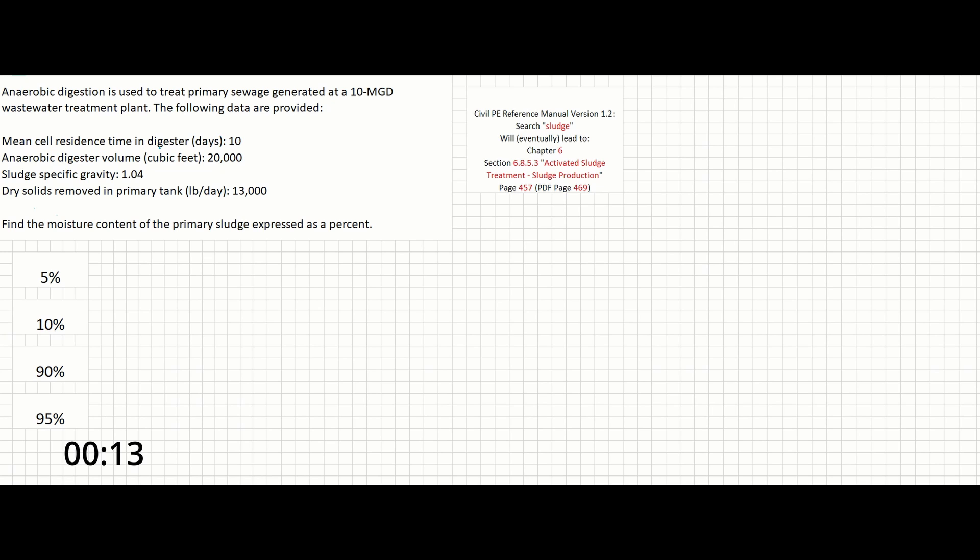The mean cell residence time in the digester is 10 days. The anaerobic digester volume is 20,000 cubic feet. The sludge-specific gravity is 1.04, and the dry solids removed in the primary tank is 13,000 pounds per day. The goal is to find the moisture content of the primary sludge expressed as a percent.